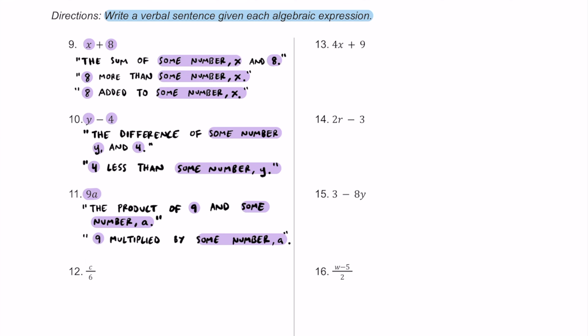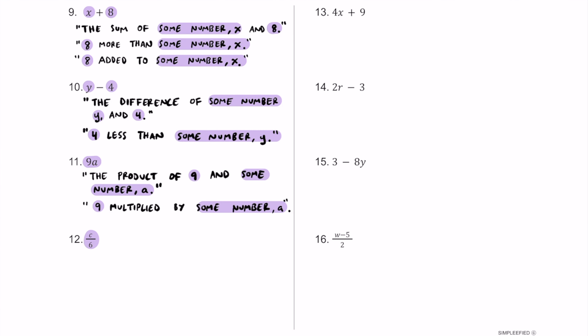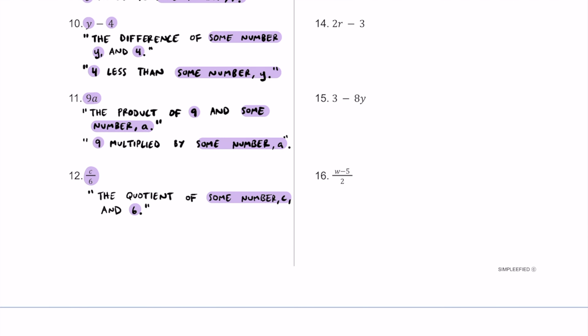For number twelve, we have c over six, which really means c divided by six. Because we are dividing, we can use the word 'quotient' and write: the quotient of some number c and the number six. Another way to write this is: some number c divided by six. You could also say c is split six ways evenly.